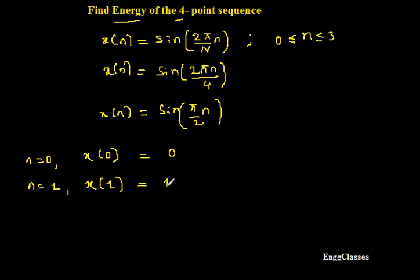Similarly, let n = 2, I'm going to get x(2). What is x(2)? If you put n = 2, 2 and 2 would cancel, I'm going to get sin π. Sin π is 0 again.